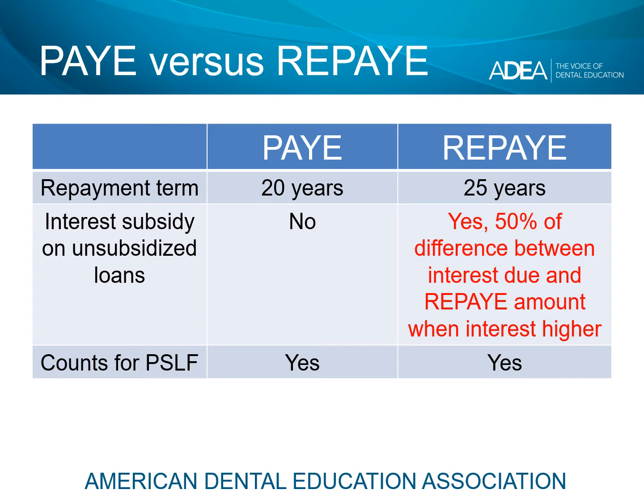An unsubsidized loan is a loan like a direct unsubsidized or direct PLUS loan, which for many dental school graduates comprises the majority of, if not all of, their student loan portfolios. With Revised Pays As You Earn, any time that the interest due each month is higher than the REPAY amount, the government will subsidize that difference by 50%. Here is a very simple example.